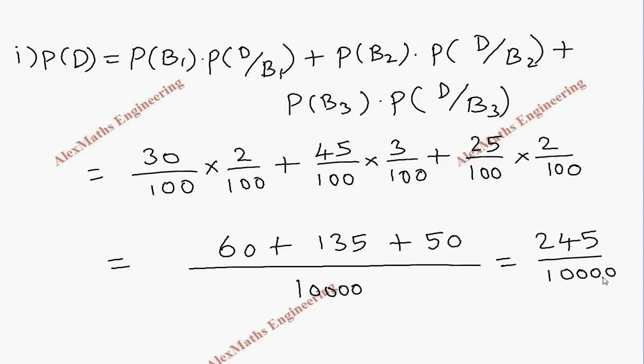So we have to move 4 decimal places from the end. So if I move from here, 1, 2, 3, 4. After moving, we get 0.0245.